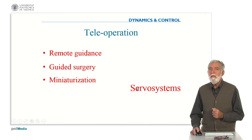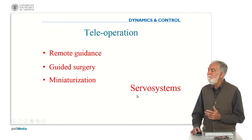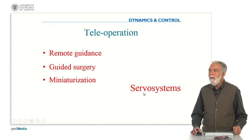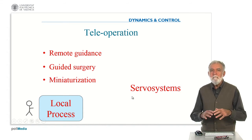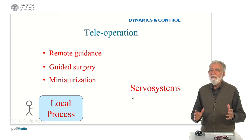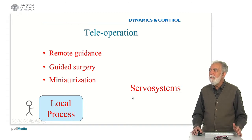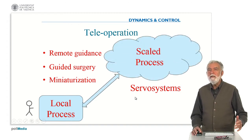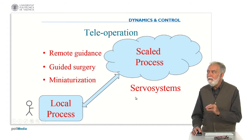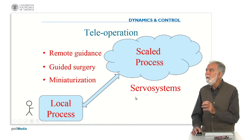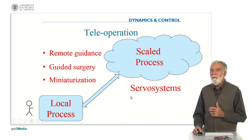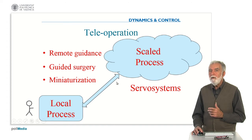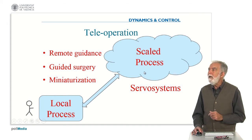Another kind of situation is miniaturization. This is a typical property of servo systems. Assume you have a local process that you can manipulate directly at a scale appropriate for you. Then you have another process which is at a different scale — it could be a miniaturized one, very much smaller, or it could be a large one. Through the servo system and the remote connection, you can replicate the same activities but at a scaled process.